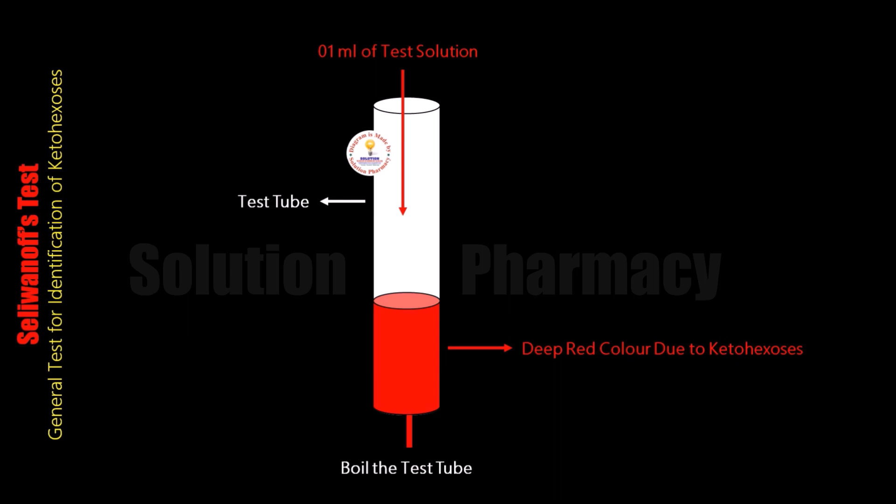Examples of keto sugars are fructose, sucrose, etc. So if fructose or sucrose is present in any sample, we can identify it by Selivanov's test — meaning if keto sugar is present in our sample it will show positive results. If aldose sugar is present, Selivanov's test shows negative results — meaning no color change takes place, and no red color formation occurs within 2 minutes, because Selivanov's test is a specific color reaction test for ketoses.